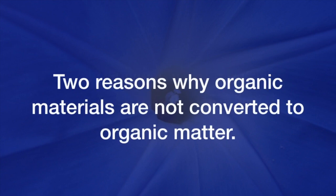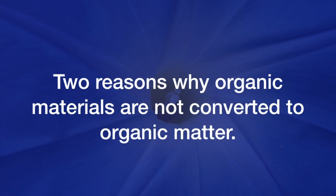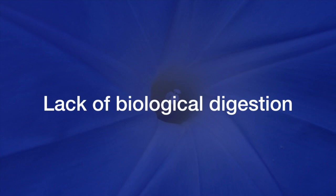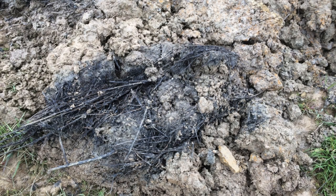There are two reasons why organic materials are not properly converted to organic matter. The first reason is simply a lack of biological digestion — when we don't have good biological digestive systems happening in the soil profile because of too much water, lack of air, or whatever the case might be.